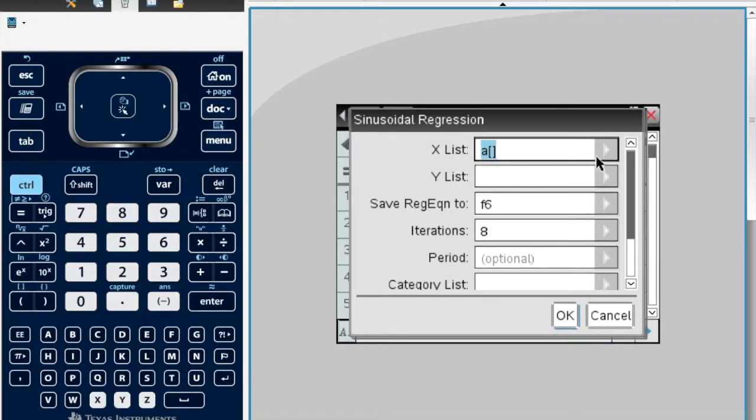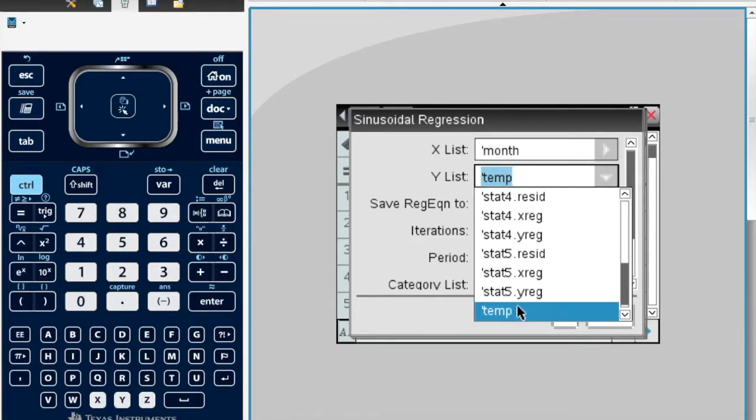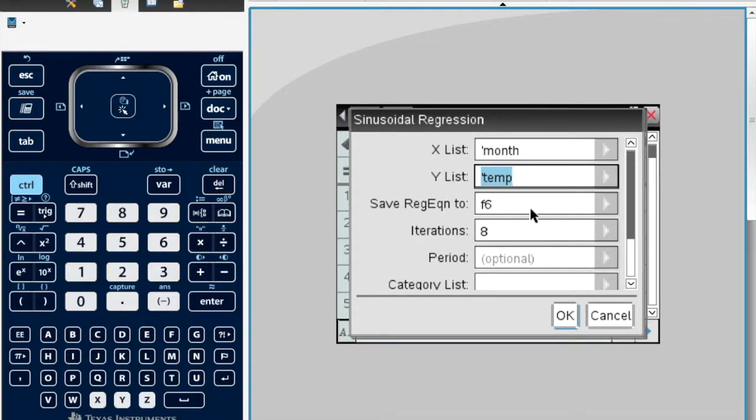My X list is in fact A, but I may as well choose month, and my Y list is the temperature. The rest is fine, you can just leave it.